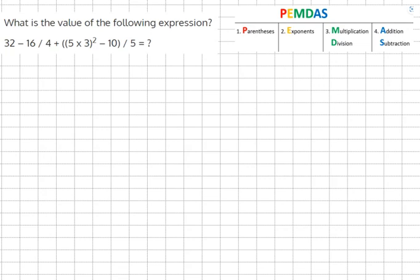What is the value of the following expression? 32 minus 16 over 4 plus 5 times 3 squared minus 10 over 5.